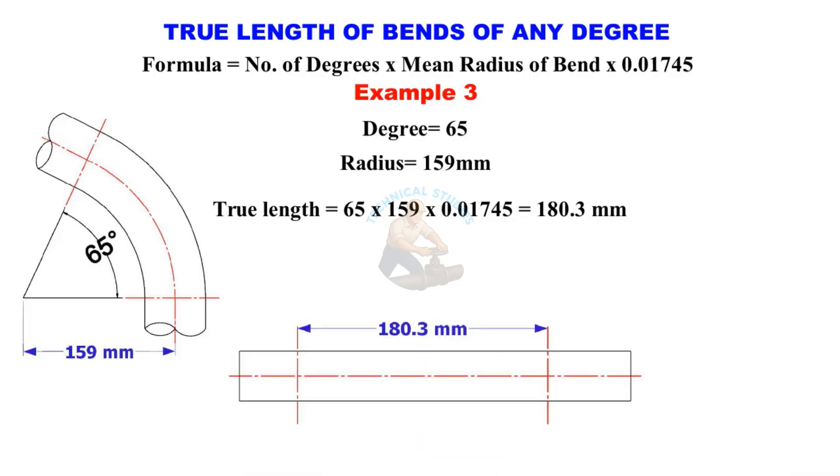So you can see how simple it is. Just remember the formula: degree times 0.01745 times radius. And you can calculate the bend length for any job in seconds.